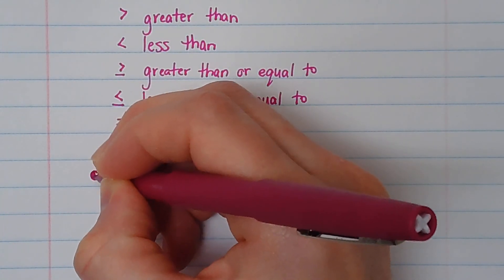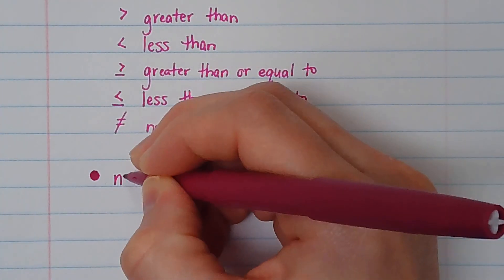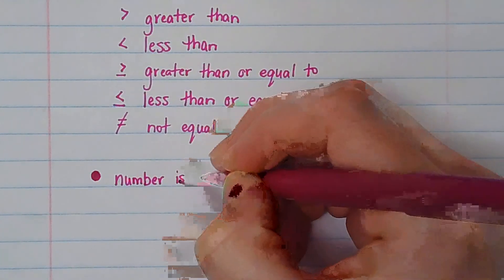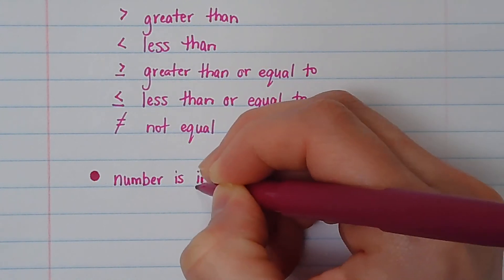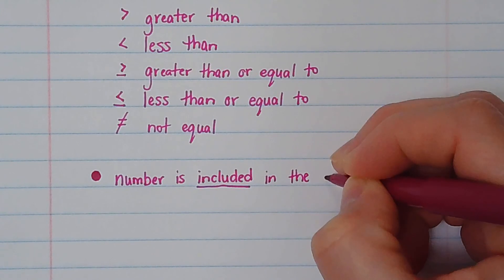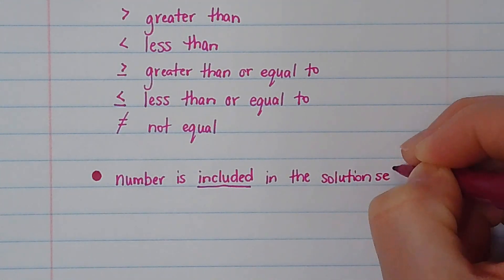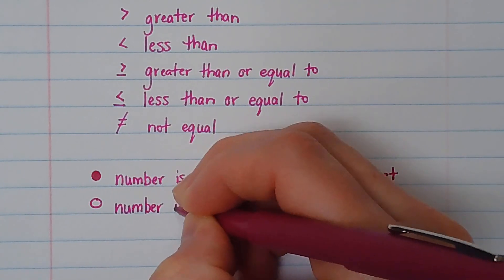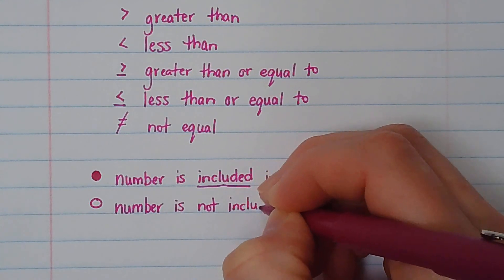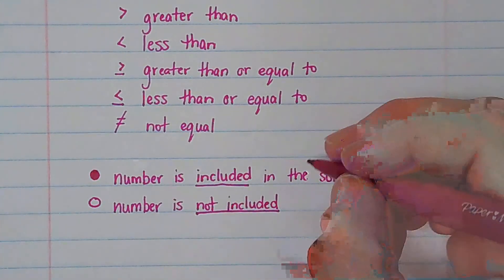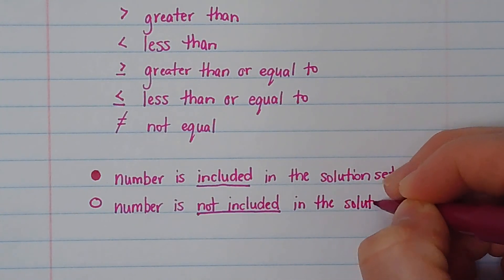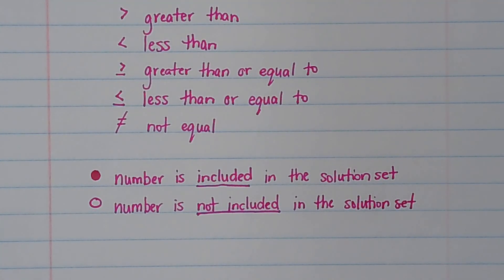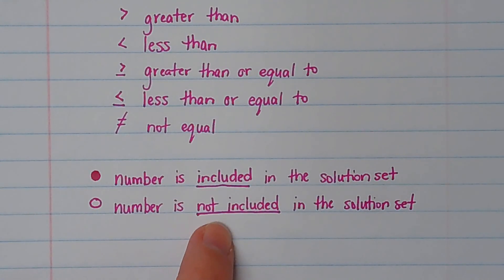If you have a circle that is filled in — a dark circle — the number is included in the solution set. If you just have an open circle that's not filled in, the number is not included in the solution set. Solution set is just a fancy way of saying the answers — solution is another word for answer. So the filled circle means it could be an answer; the open circle means it's not going to be an answer.